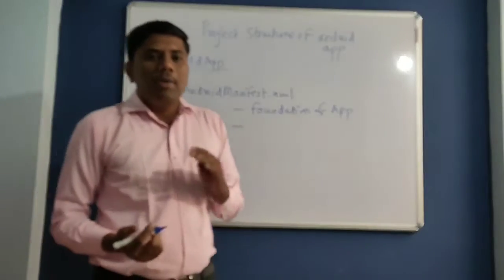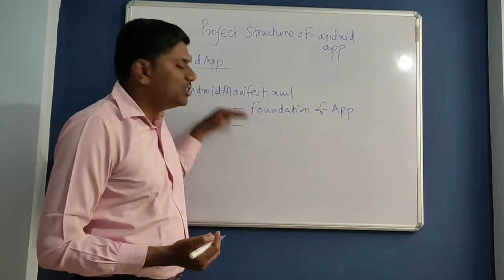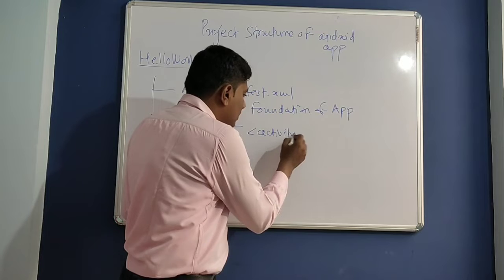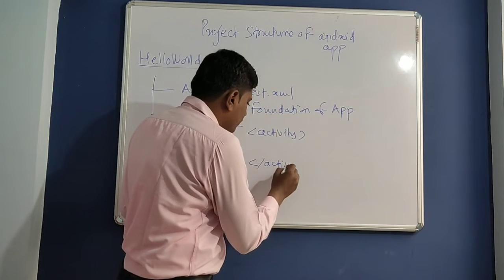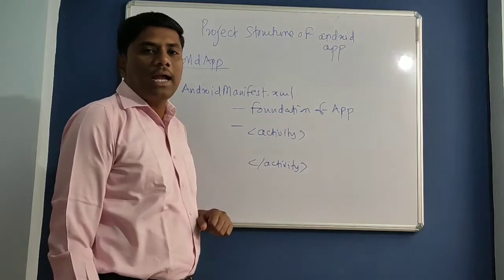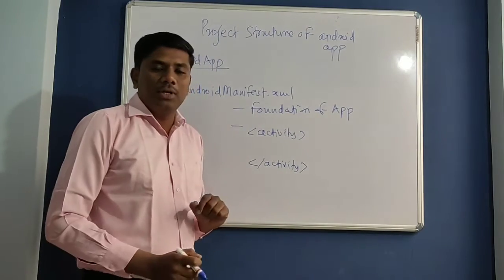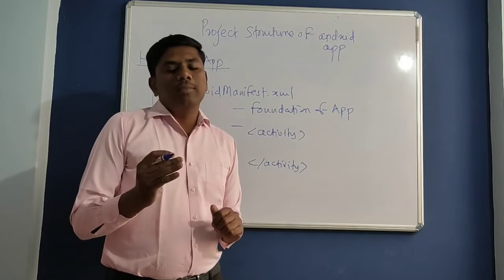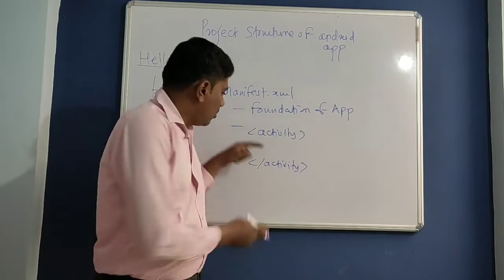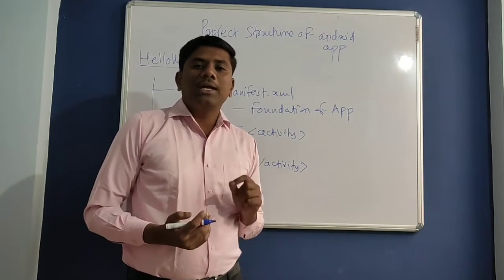In AndroidManifest.xml, suppose my Android application has three activities — all those three activities will be registered in this file using the activity tag. So whatever number of activities are present in your Android application, all those activities will be registered in AndroidManifest.xml with the help of the activity tag.